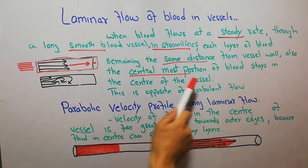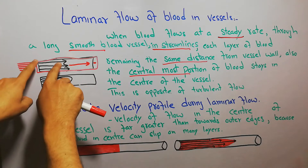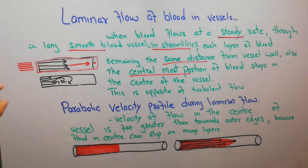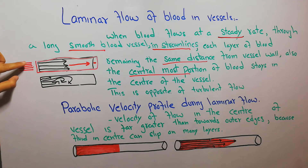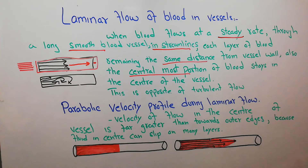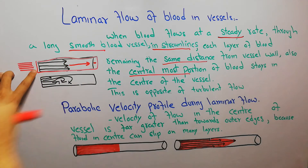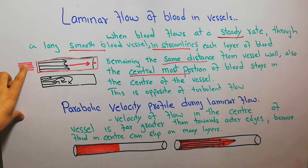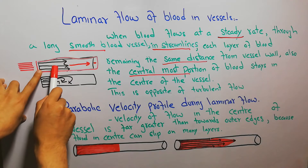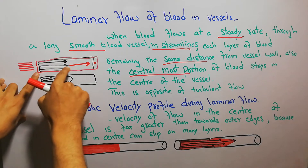This diagram shows a blood vessel with different layers of blood. The blood is present in different layers — molecules of blood lying on each other, making layers. In laminar flow, these layers flow at a steady rate in streamlines.